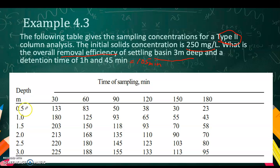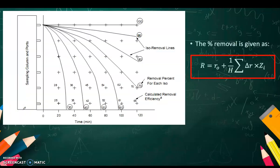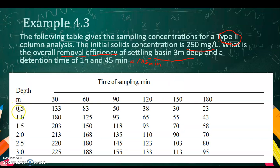It will give you this data. At 0.5, 1, etc., at time sampling, you withdraw liquid from that point. This one will be your concentration of it. This result, 133, 83, is all concentration.